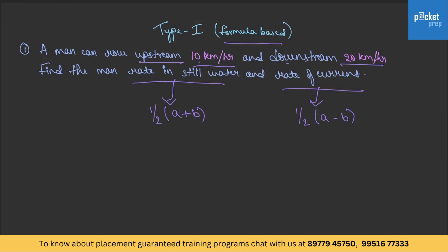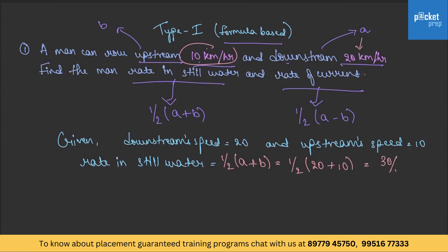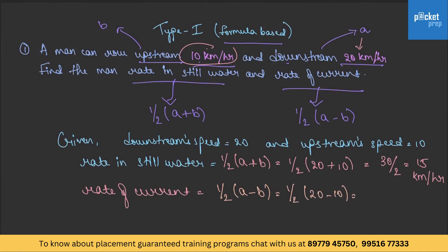Downstream is a and upstream is b. So downstream speed a is 20 and upstream speed b is 10. Rate in still water is half of a plus b, which is half of 20 plus 10, that is 30 divided by 2, which equals 15 km/h. Similarly, rate of current equals rate of stream, which is half of a minus b — half of 20 minus 10 — that is 10 divided by 2, which equals 5 km/h.